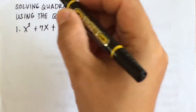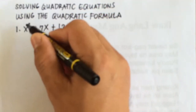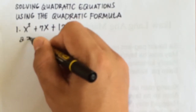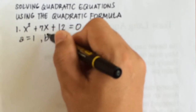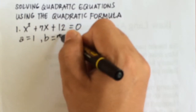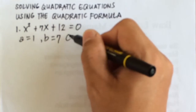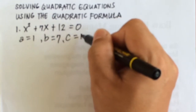Let's have some examples. Number 1: x squared plus 7x plus 12 equals 0. First, find the values of a, b, and c. Here a is the numerical coefficient of x squared, so a is 1. b is the numerical coefficient of x, so b is 7. And c is the constant term, so c is 12.